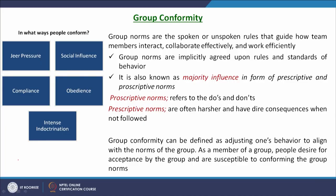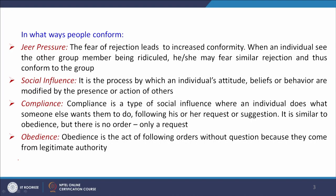Group conformity can be defined as adjusting one's behavior to align with the norms of the group. As a member of the group, people desire acceptance and are susceptible to conforming to group norms. When we want to be accepted by other members, we have to follow the line of rules. We cannot refrain or derail from the group because that can affect an individual's identity and the functioning of the organization. But how does a member conform? There are certain reasons why a person wants to conform to group rules.